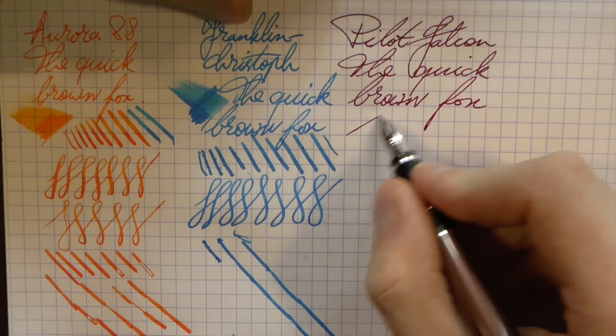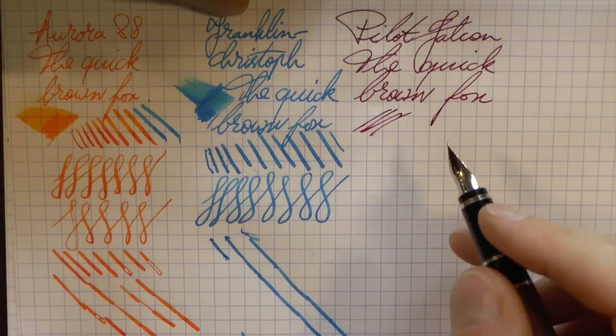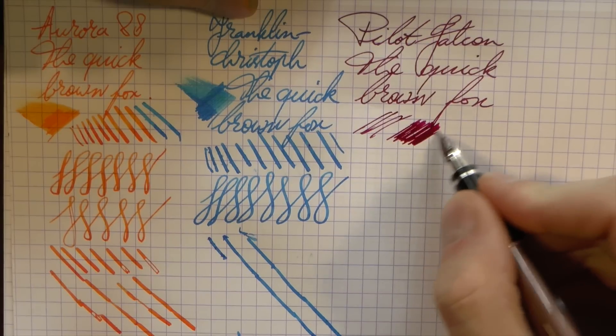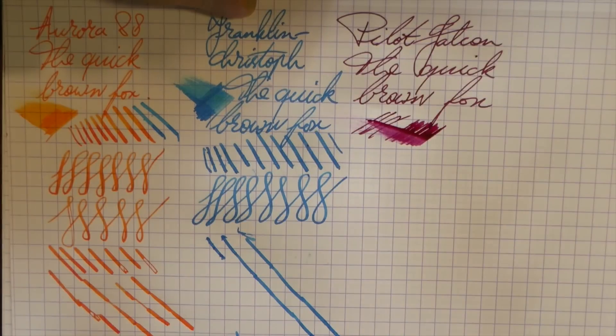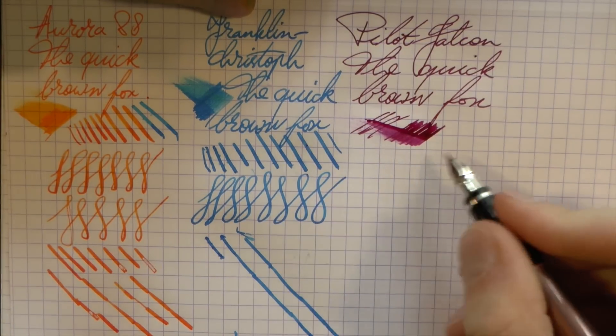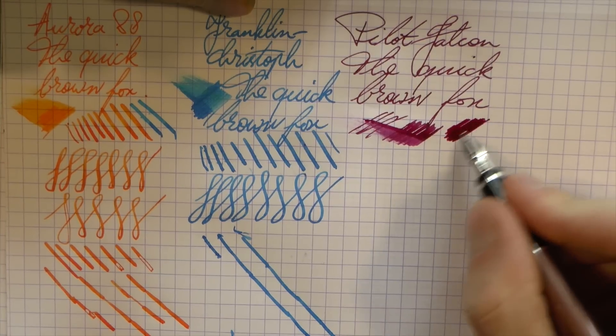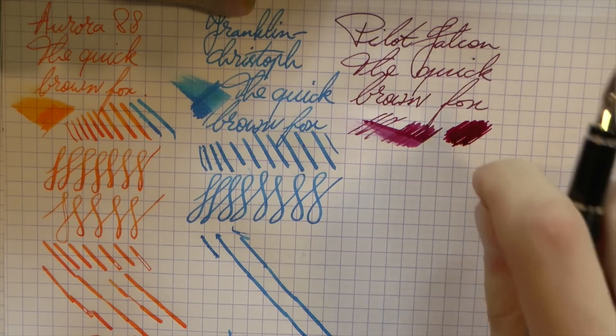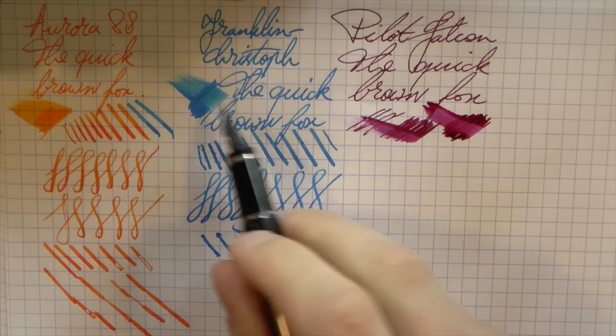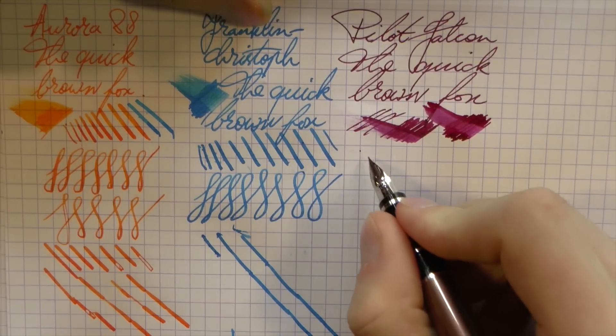It's also feedbacky. And when it comes to smoothness, the Franklin Christoph, I find the smoothest of these three. So if that's what you're looking for, then that's probably what you should pick. It is also a nice wet nib, which is interesting for such a fine nib. And although that is feedback, I don't find this particularly unpleasant. I find the Aurora to be the most feedbacky of these three nibs, even though this nib is a bit finer. Interesting. Now, what you want to see? The flex.